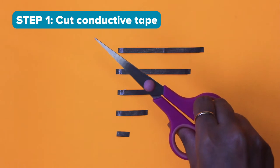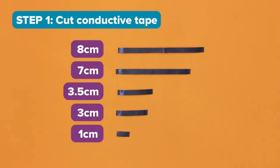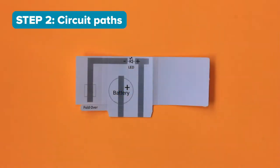Step 1. Cut your conductive tape: 8 centimeters, 7 centimeters, 3 and a half centimeters, 3 centimeters, and 1 centimeter.